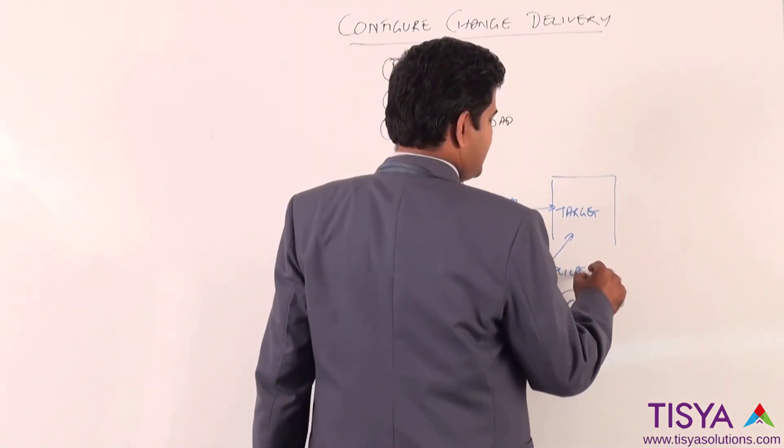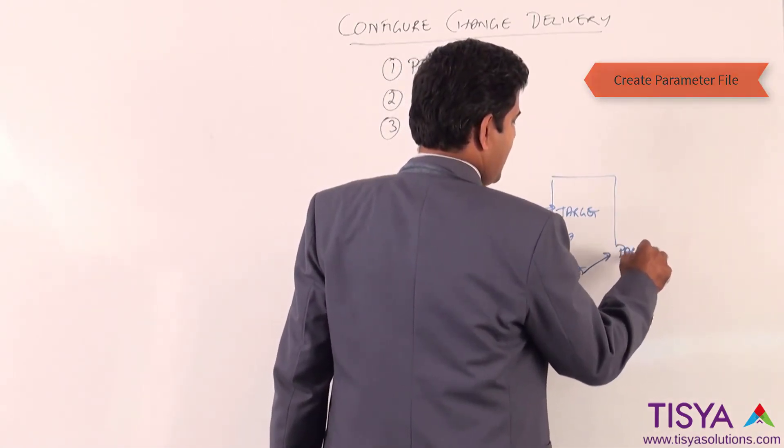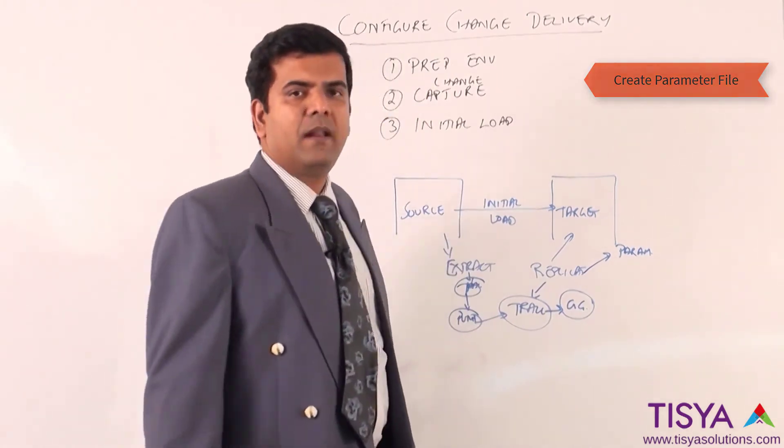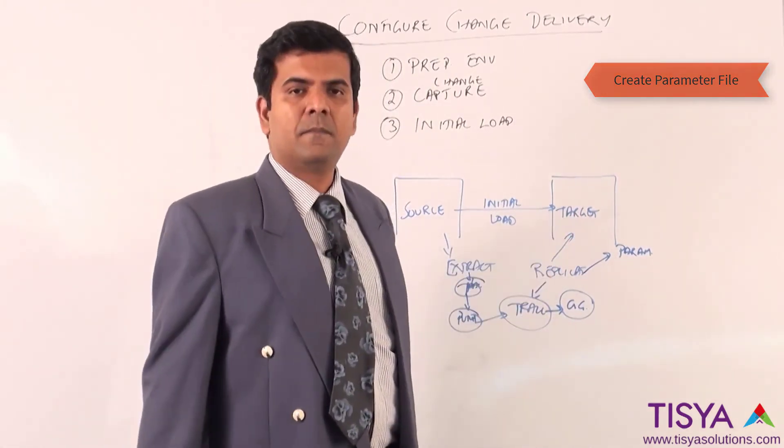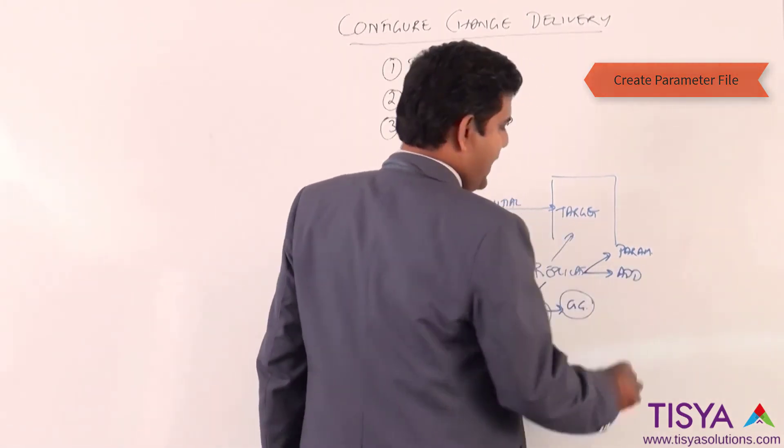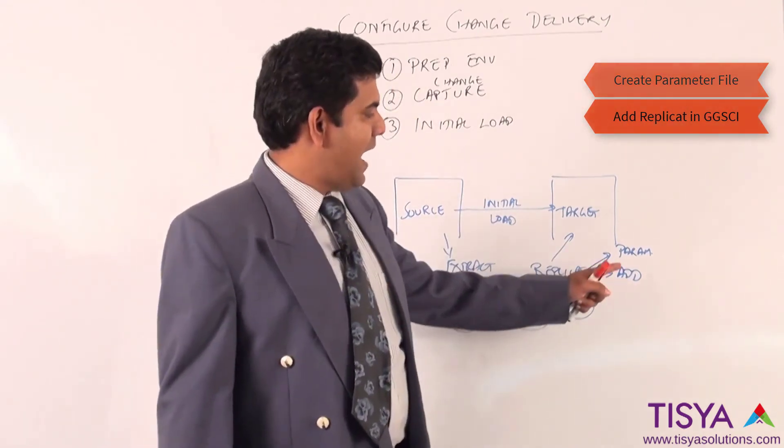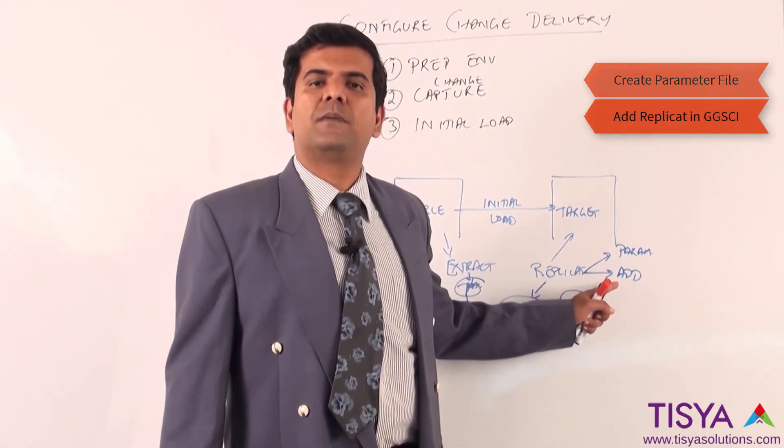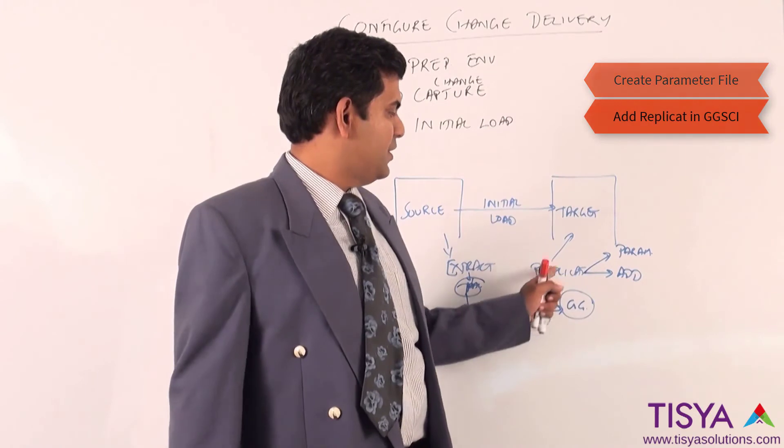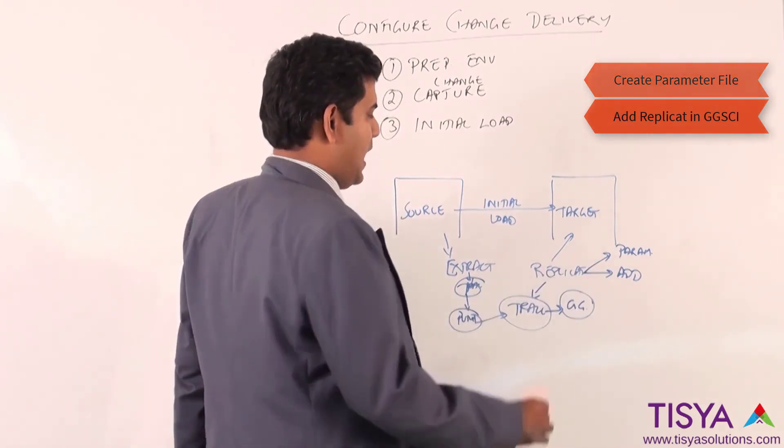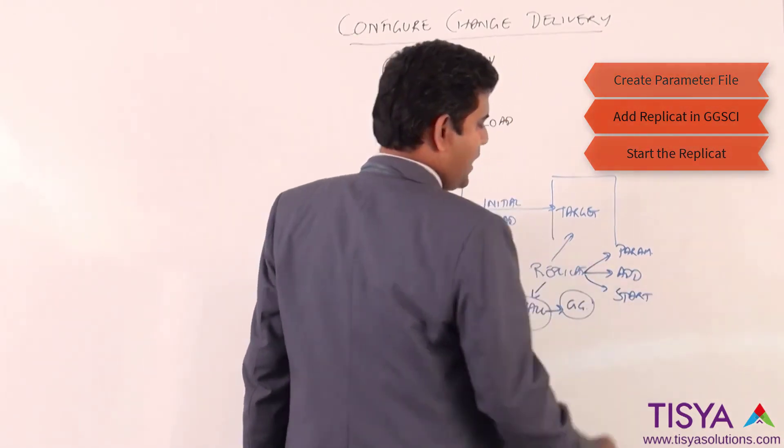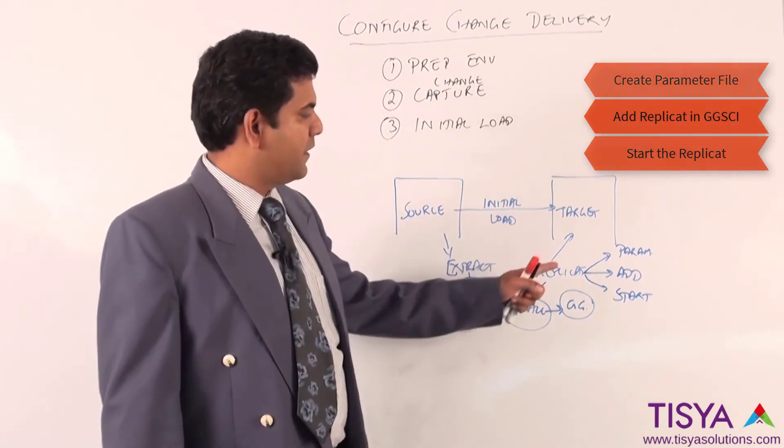In order to add a replicate, the steps are very simple: ensure you have a parameter file in place on the target system, ensure you have added the replicate and when you add the replicate you would also specify the trail file which it will read, and then lastly you will go and start the replicate.